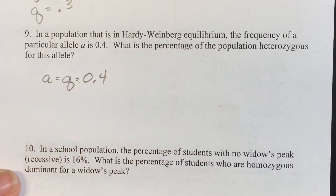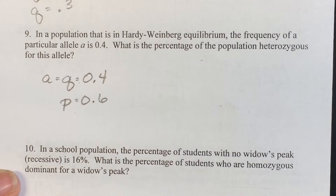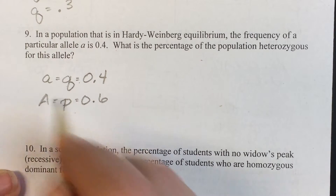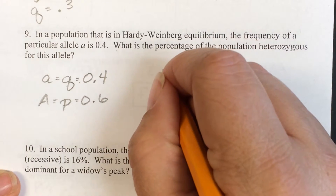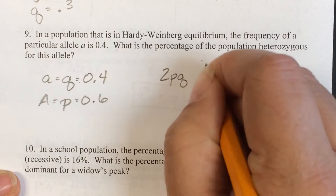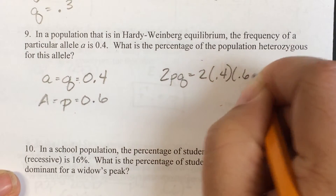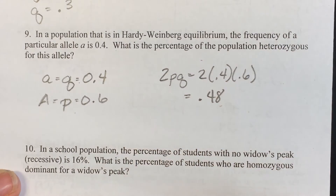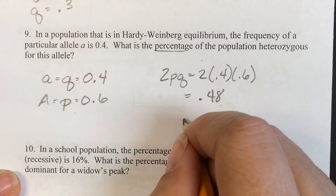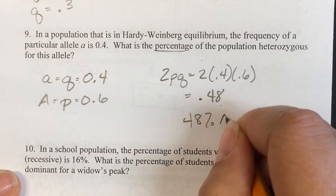If q is 0.4, then p must be 0.6, because that's our dominant allele and p plus q equals 1. The question is asking for the heterozygous percentage, so we need 2pq. 2pq equals 2 times 0.4 times 0.6, which is 0.48 — so the answer is 48% heterozygous.